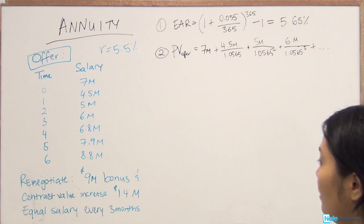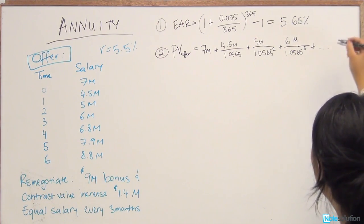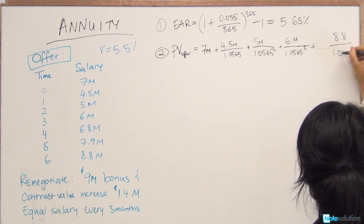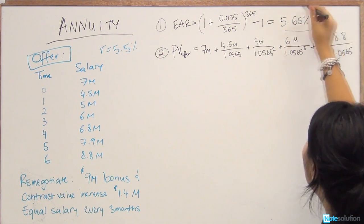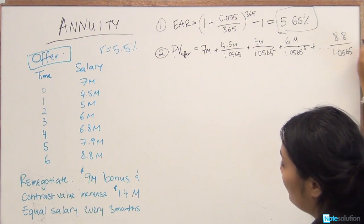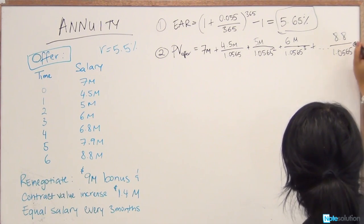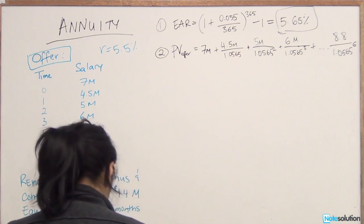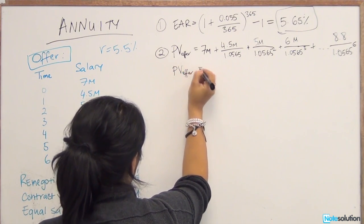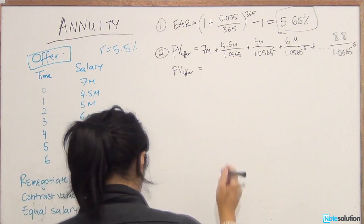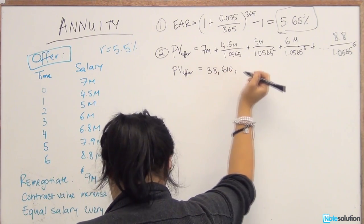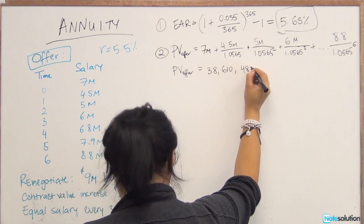And so on and so forth until you get to $8.8 million divided by 1.0565. So you're receiving the last cash flow in period six, so this is to the power of six. So the present value of the offer, once you calculate each term, is $38,610,482.57.